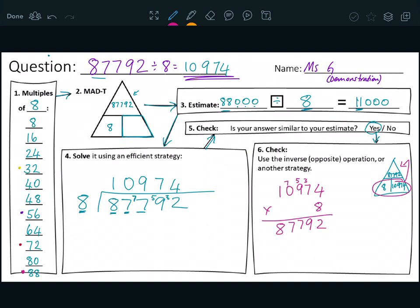So did I get the same number as that? Eighty-seven thousand seven hundred and ninety-two. Yes, these numbers are the same. This number is the same as this number. So therefore, my answer is correct. So I'm happy with that. I hope this is helpful. See you later.